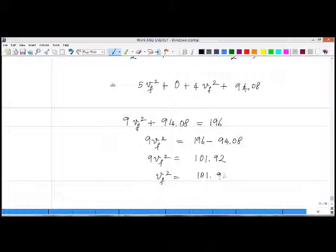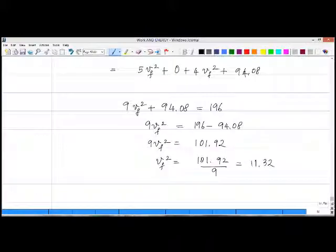This way we can figure out what our v_f squared is. It'll be 101.92 divided by 9, which is 11.32. Now I can find the square root of that and get the answer, about 3.36 meters per second.